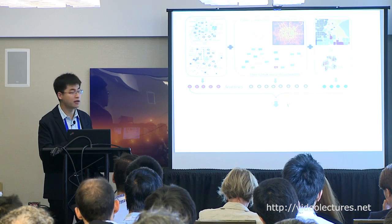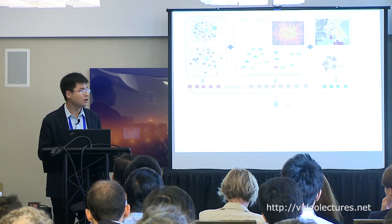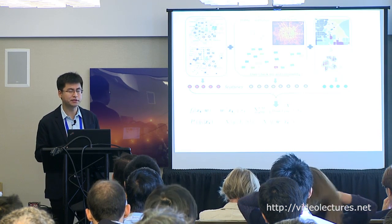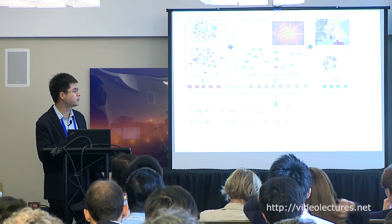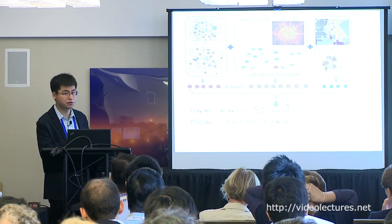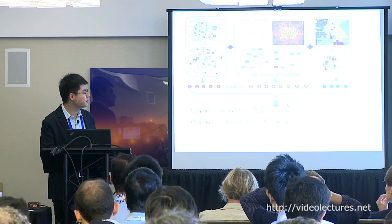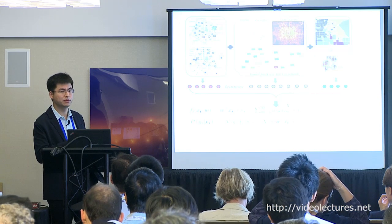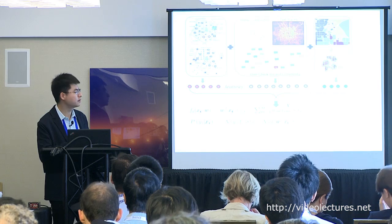We combine features through feature fusion. The model uses a simple linear regression: X is the feature vector combining all features from different datasets, and we predict the increase value. This is an intuitive regression process with feature vector X and weight parameter omega.